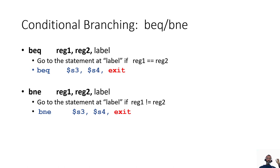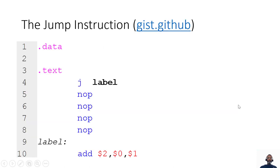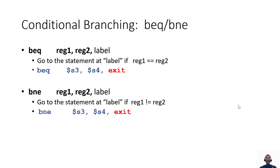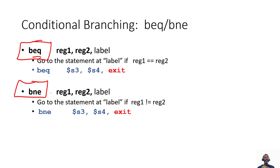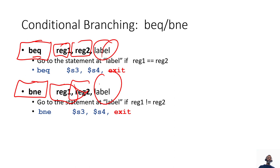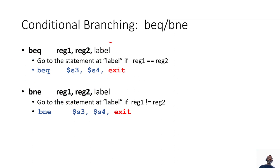In a previous discussion we talked about the jump instruction. Now let's talk about the branching instructions BEQ and BNE. BEQ stands for branch if equal, BNE stands for branch if not equal. We're testing whether the values in two registers are equal, and if they are or aren't equal, we jump to a particular label in memory. For example, if registers S3 and S4 are equal, we go to the exit label.